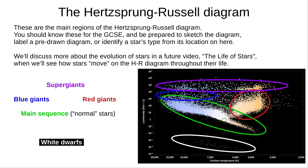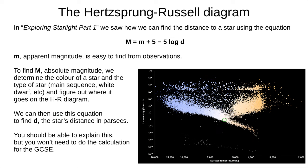Remember, this isn't actual motion as the graph doesn't show location. Finally today, how can we use the HR diagram to find the distance to a star? In part one we learned the distance modulus formula. This has three variables: absolute magnitude, apparent magnitude, and distance. If we know two variables, we can calculate the third.